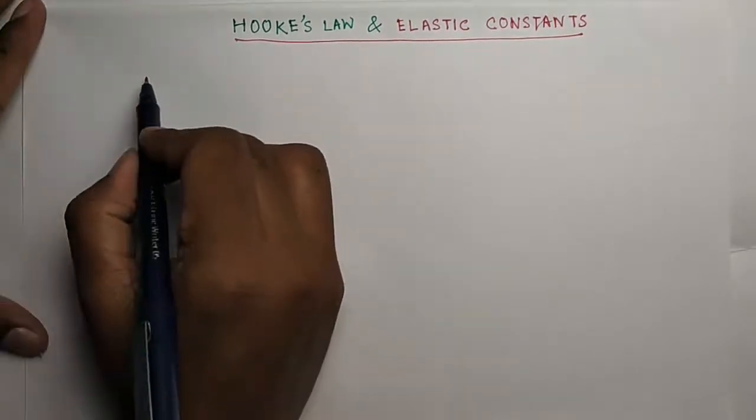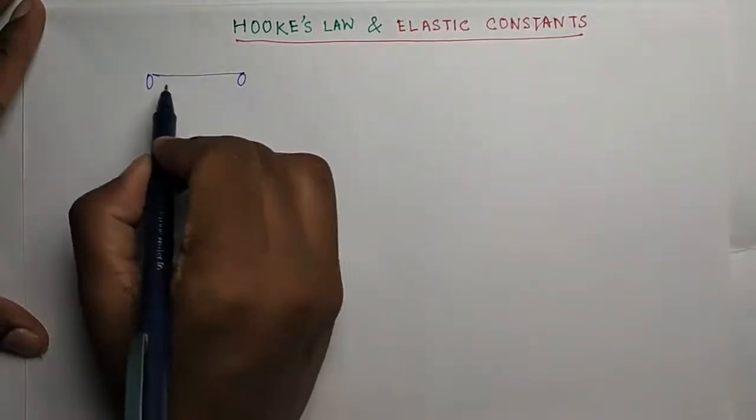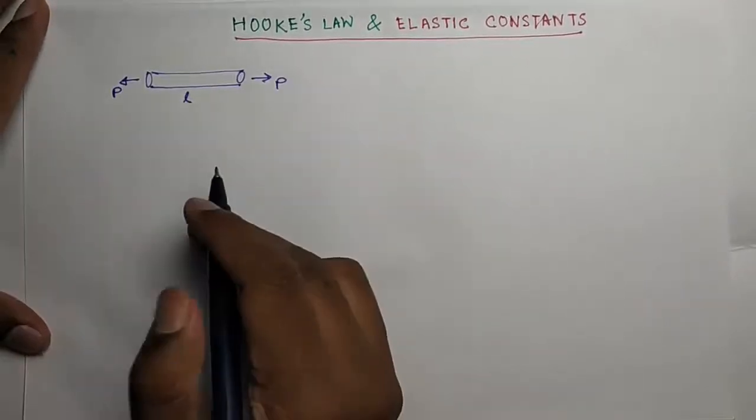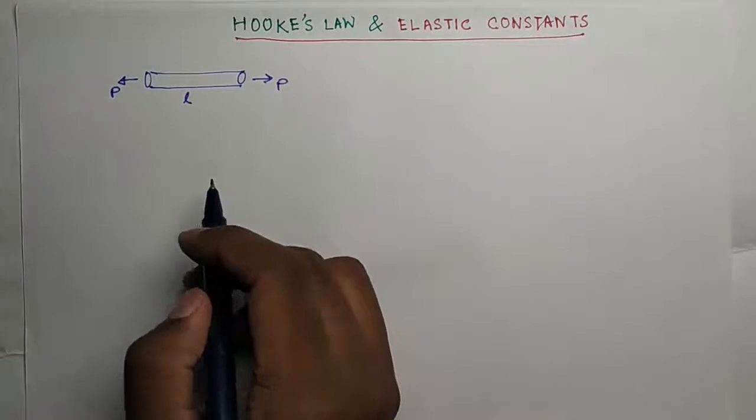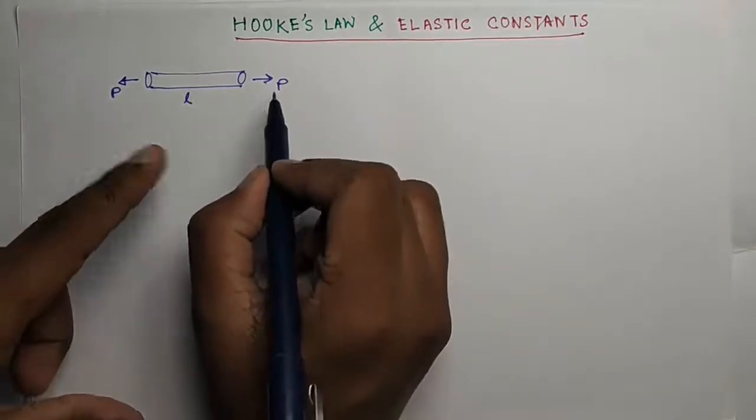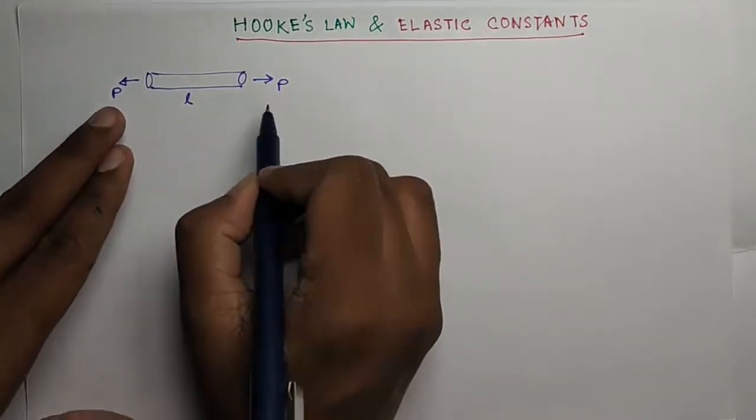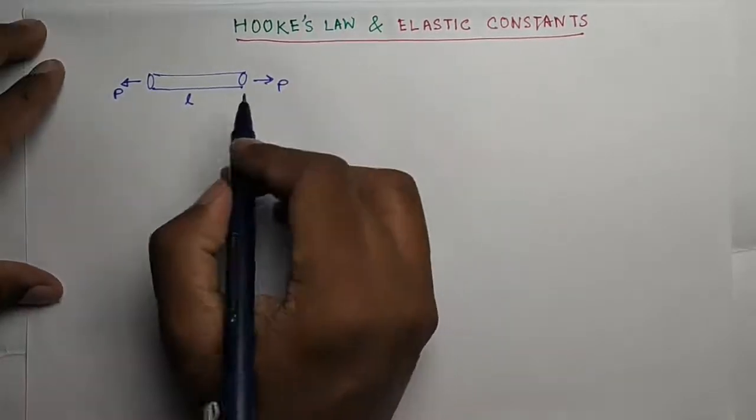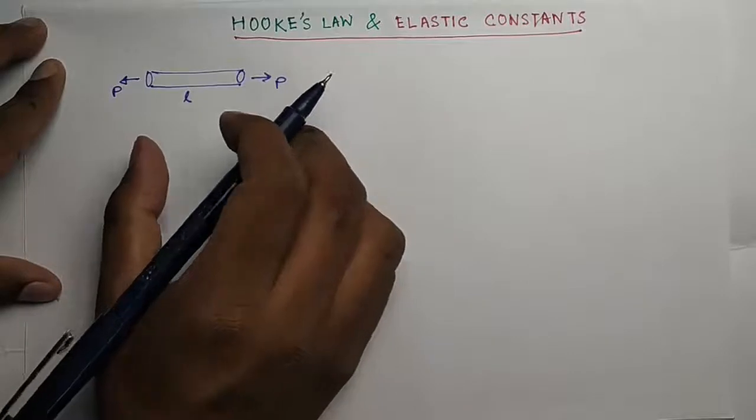To start with Hooke's law, let's draw the circular bar again which I discussed in the previous video. The length is L and there is some elastic limit within the body. Up to the elastic limit, if you stretch the bar there is some deformation and you then release the forces, then the bar will regain its original length.